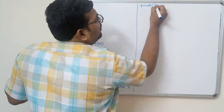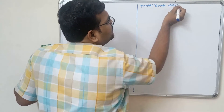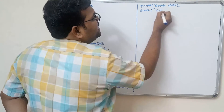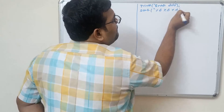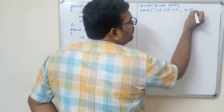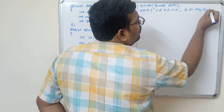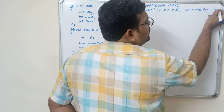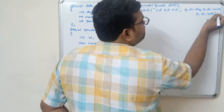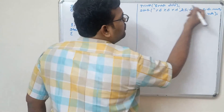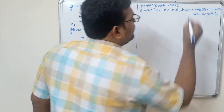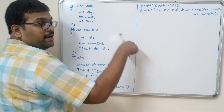For date of birth input: `printf("Enter date of birth:")` then `scanf("%d %d %d", &s1.d1.day, &s1.d1.month, &s1.d1.year)`. We need to read three members, and remember to use the ampersand symbol in scanf.